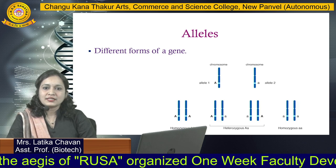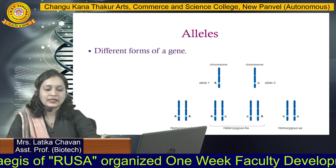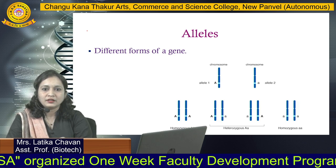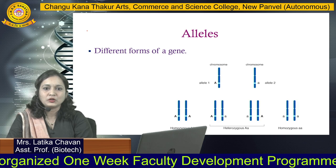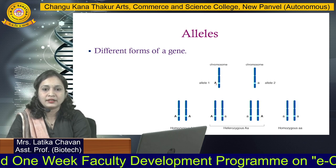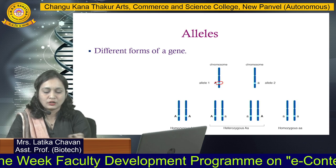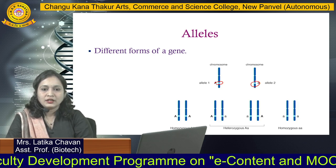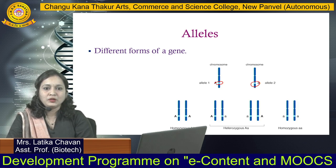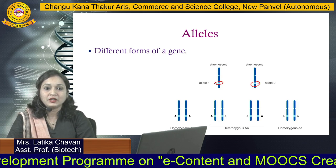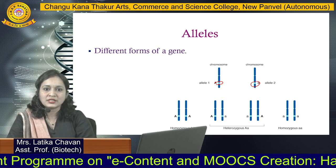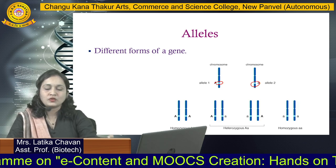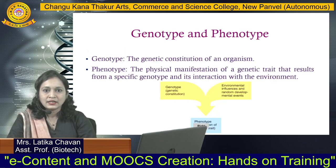So what are alleles? Basically these are the different forms of genes. If you look over here, these are the different chromosomes and on there the different alleles are located — A as well as B. So here we are going to compare between the two alleles which are either homozygous or heterozygous. So the first concept was alleles.